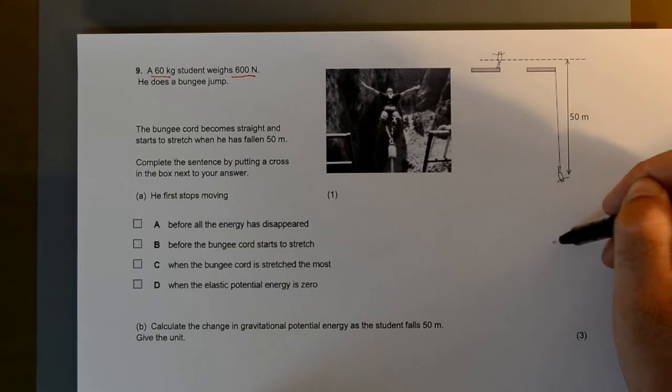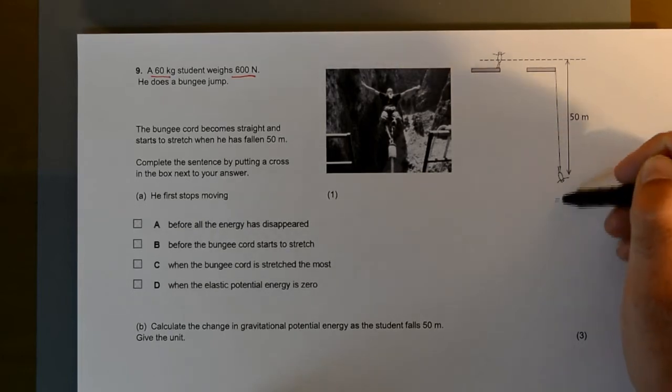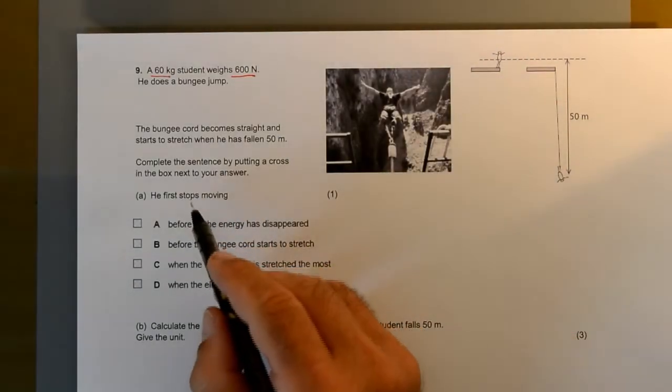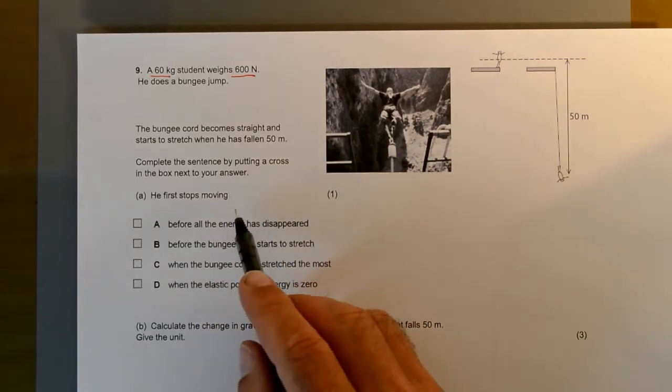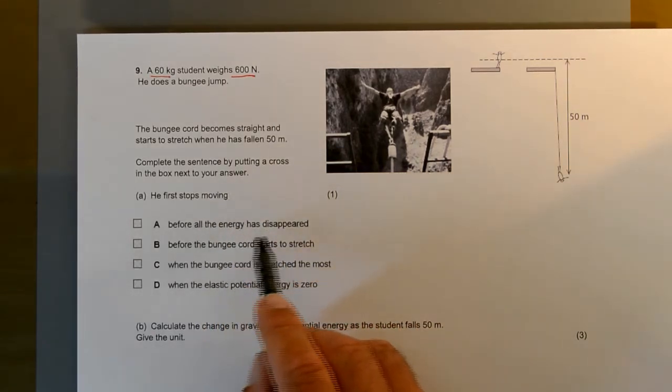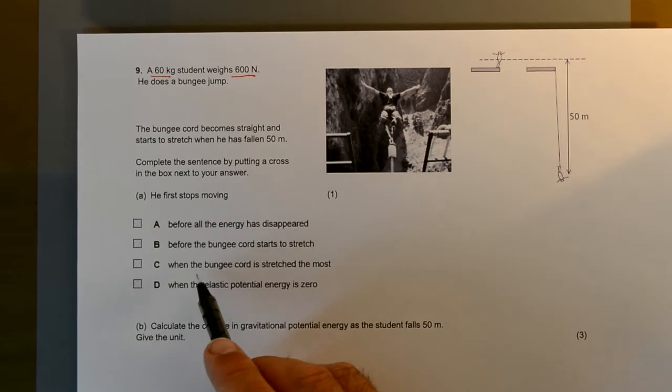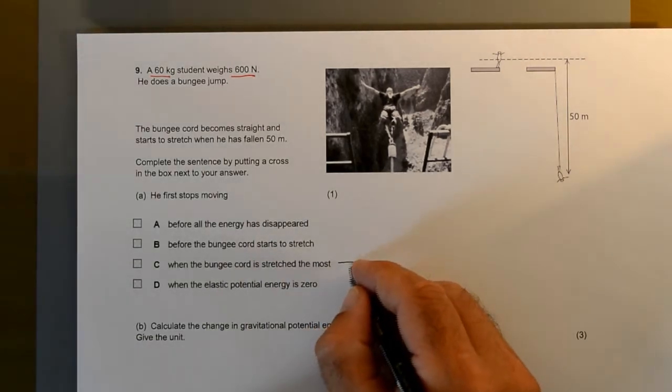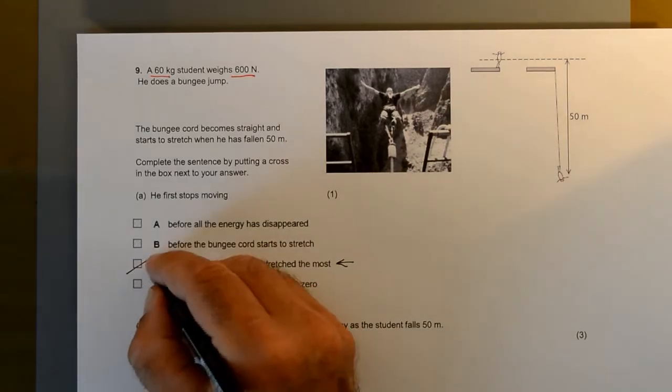So he slows, slows, slows, eventually stops and then bounces back up again. He first stops moving at the bottom, before the bungee cord starts to stretch. When the bungee cord is stretched the most, it's at the bottom of the bungee cord.